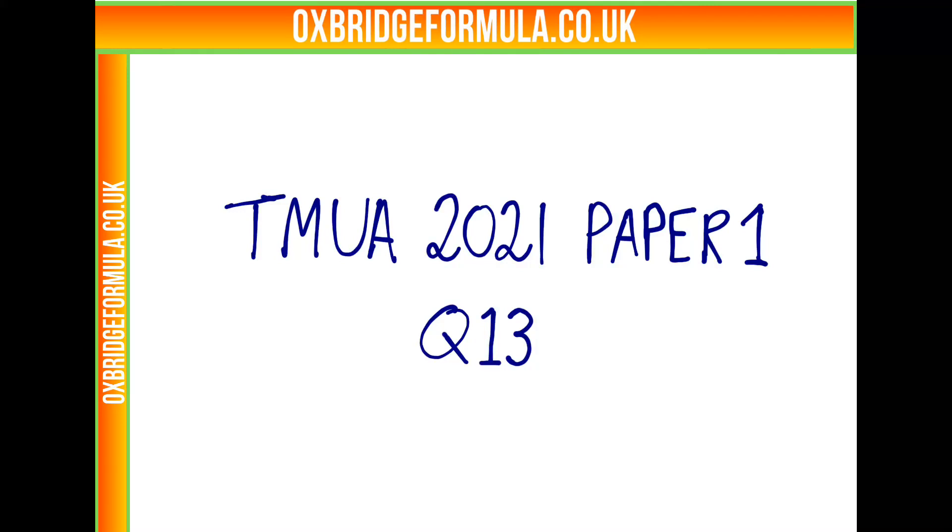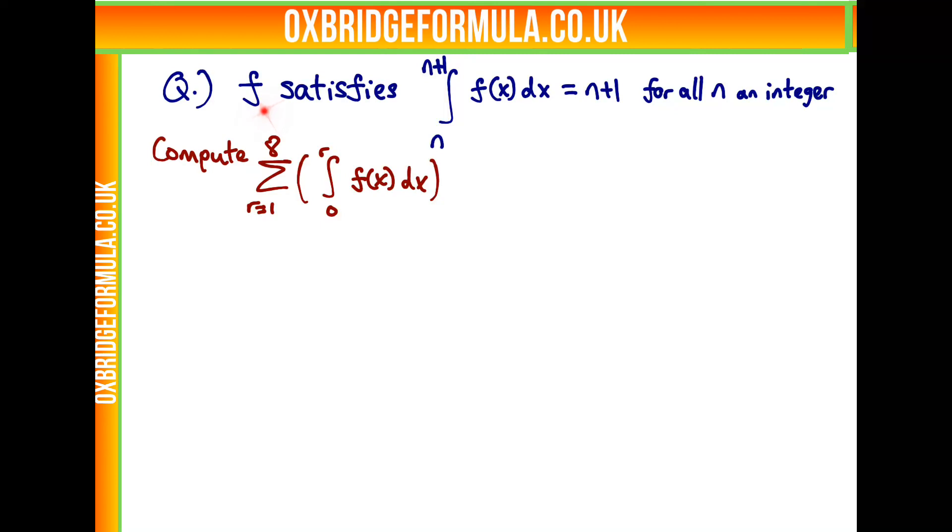This is TMUA 2021 paper 1 question 13. Given that the function f satisfies the integral of f from n to n plus 1 equals n plus 1 for all n an integer, we're asked to compute the sum from r equals 1 to 8 of the integral of f from 0 to r.